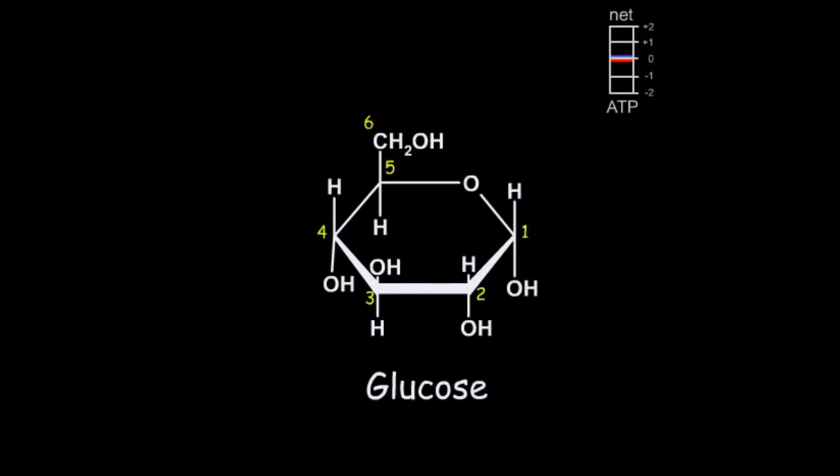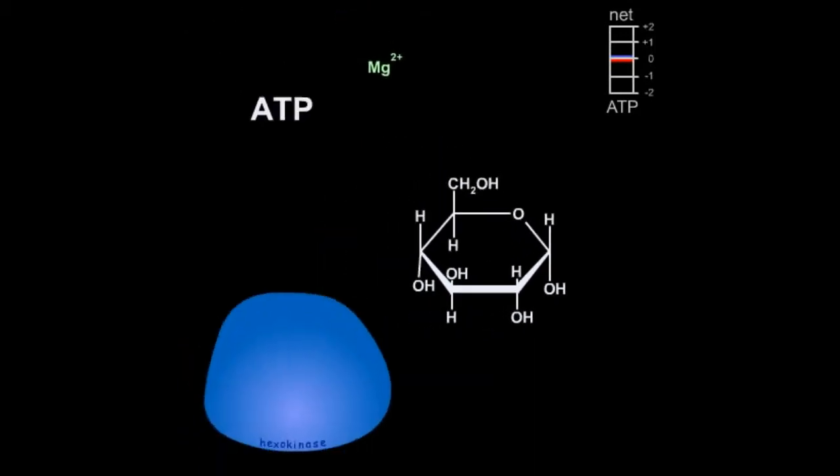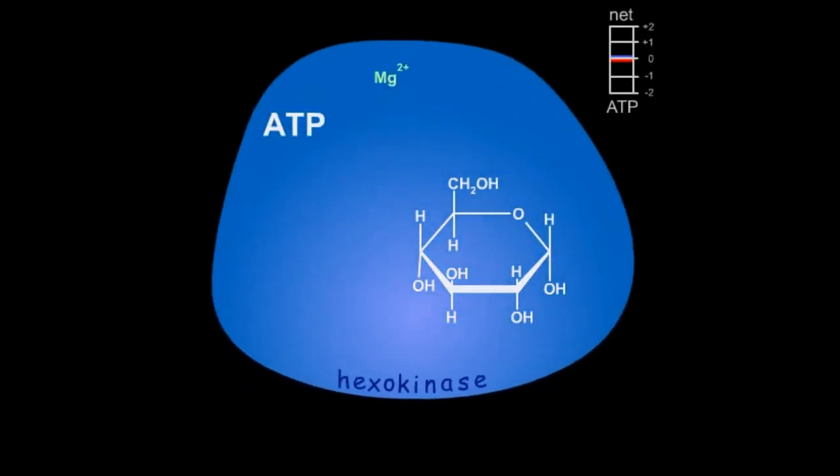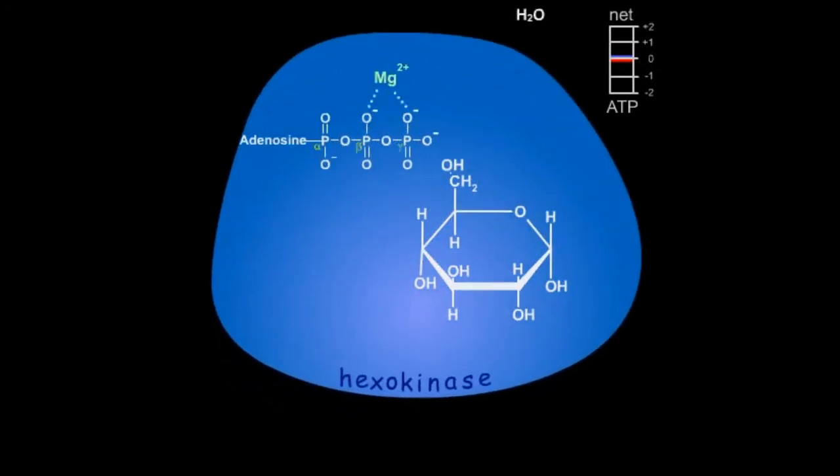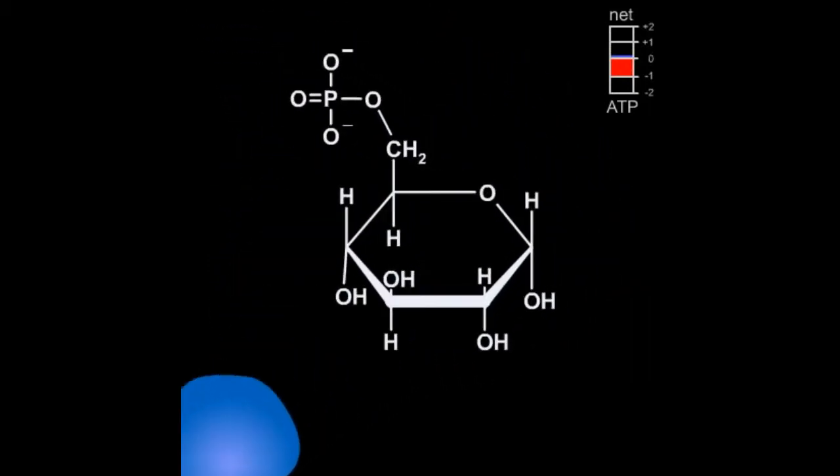The first reaction of glycolysis is catalyzed by the enzyme hexokinase, which mediates the transfer of ATP's gamma-phosphoryl group to the number six carbon of glucose. The reaction occurs through nucleophilic attack of glucose's 6-hydroxyl group on the gamma-phosphoryl atom, which yields glucose-6-phosphate and ADP. This is the first reaction in which free energy of ATP hydrolysis is consumed.